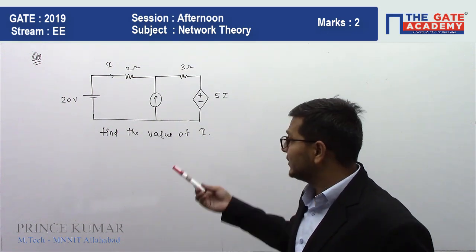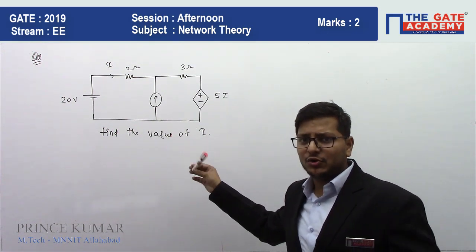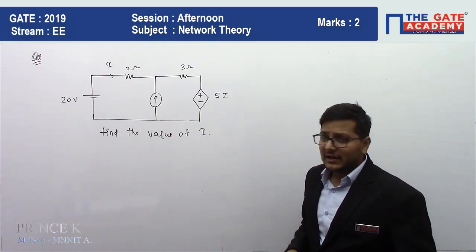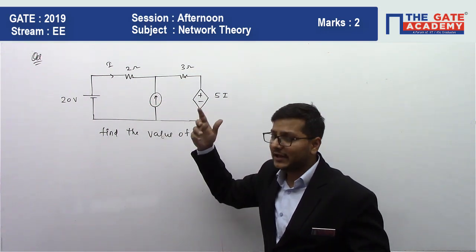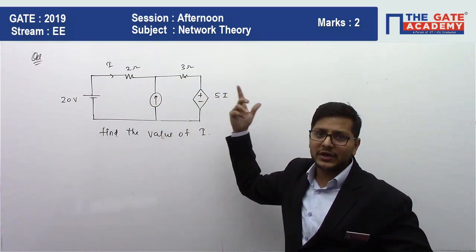Hello guys, my name is Prince Kumar. I am going to discuss a GATE 2019 problem. This belongs to network analysis. We can see here we have a circuit given. This may have a dependent source. They ask, what is the value of I?